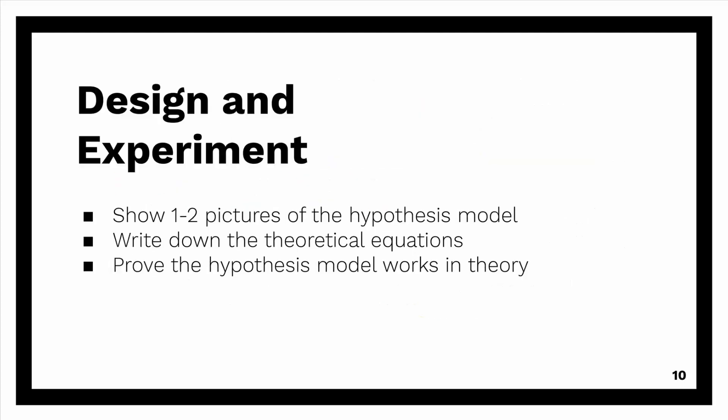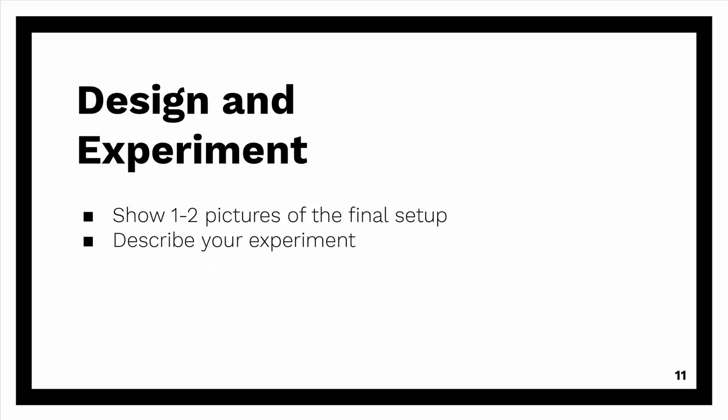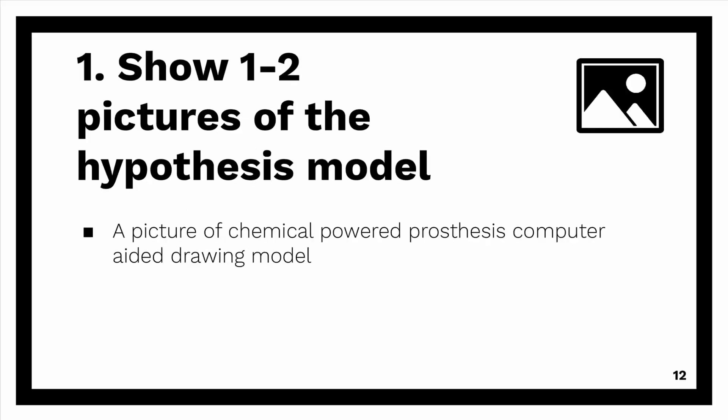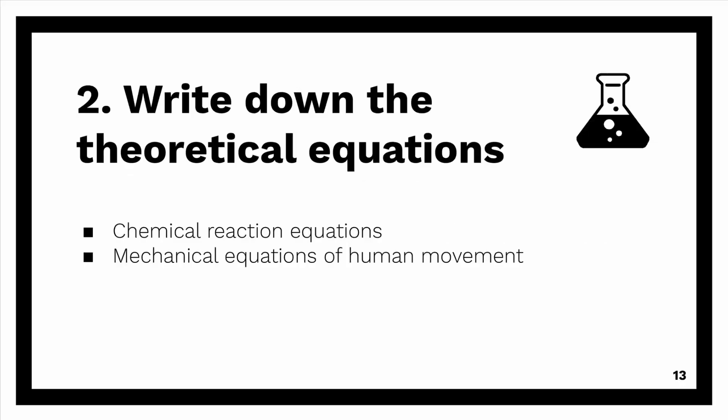After the introduction, the next thing is design and experiment. You need to show one to two pictures of the hypothesis model. You need to write down the theoretical equations. You need to prove the hypothesis model works in theory. Moreover, you also want to show one to two pictures of the field setup and describe your experiment. In my paper, I showed a picture of the chemical powered prosthesis computer-aided drawing model. Then I wrote down the theoretical equations: the chemical reaction equations and the mechanical equations of human movement.